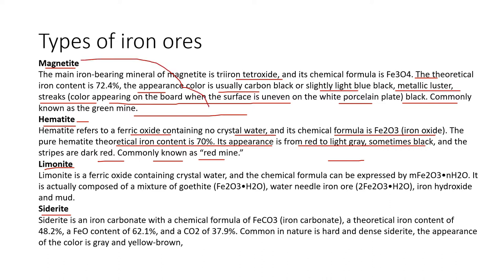Limonite is ferric oxide containing crystal water, and the chemical formula can be expressed as mFe2O3·nH2O. It is actually composed of a mixture of goethite (Fe2O3·H2O), needle iron or iron oxide, and iron hydroxide and mud.